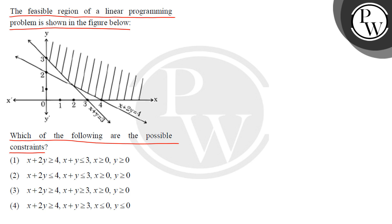First option is x plus 2y is greater than or equal to 4, x plus y is less than or equal to 3, x is greater than or equal to 0, y is greater than or equal to 0. Option 2 is x plus 2y is less than or equal to 4, x plus y is less than or equal to 3, x is greater than or equal to 0, y is greater than or equal to 0.